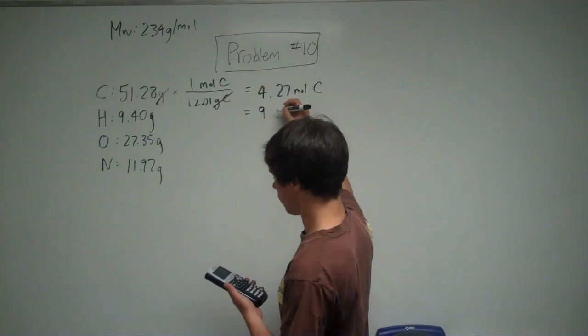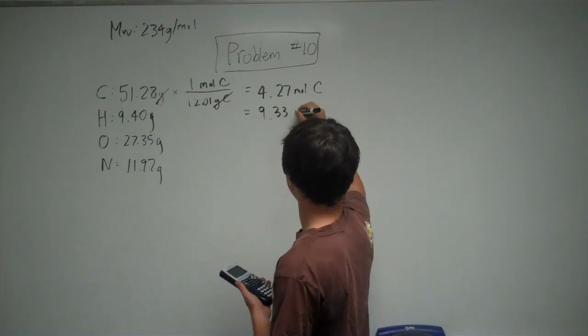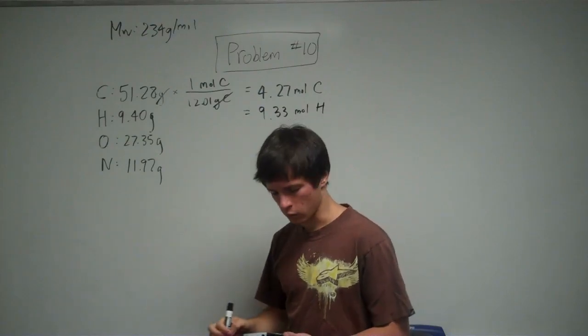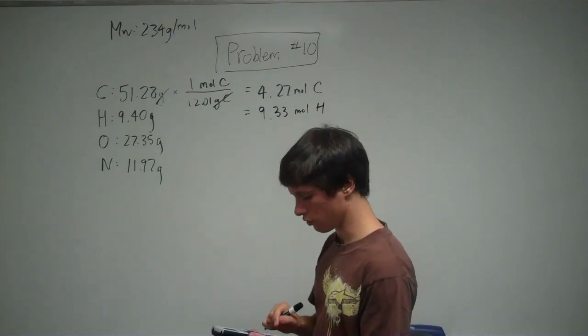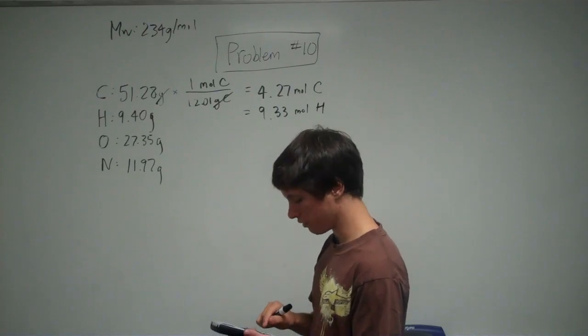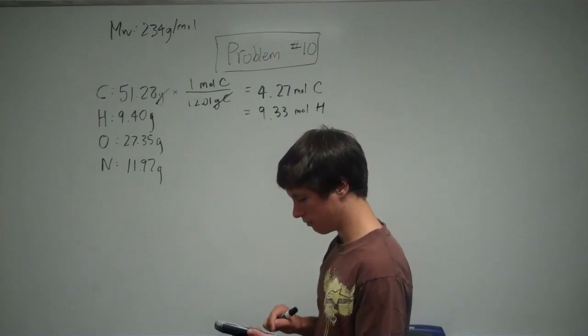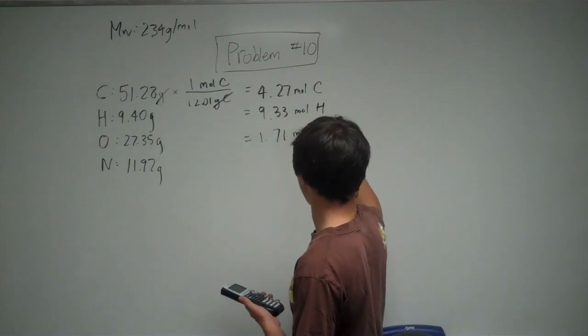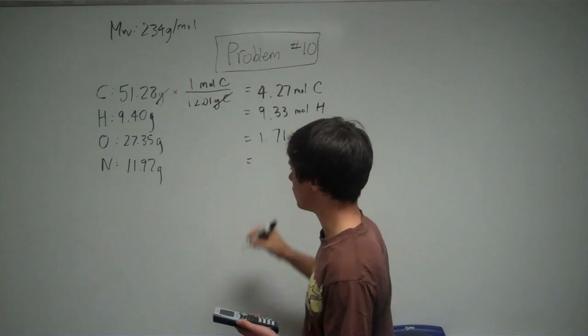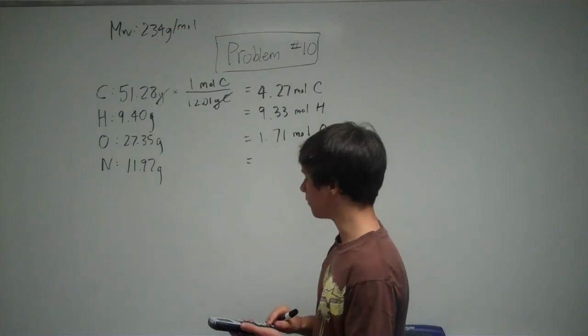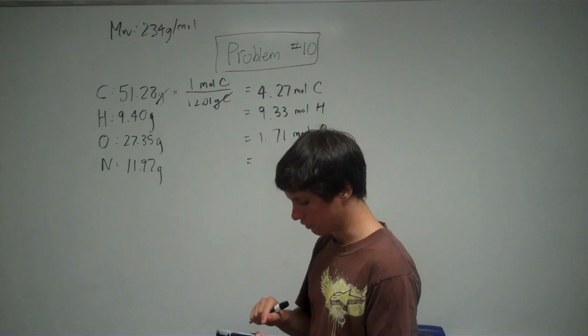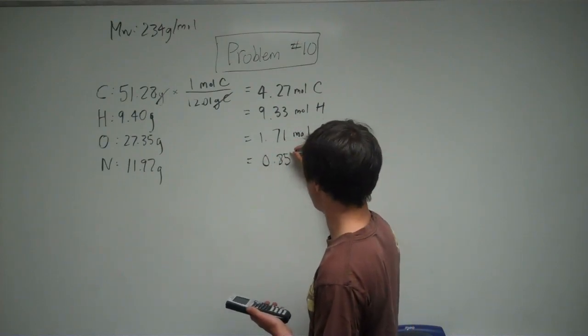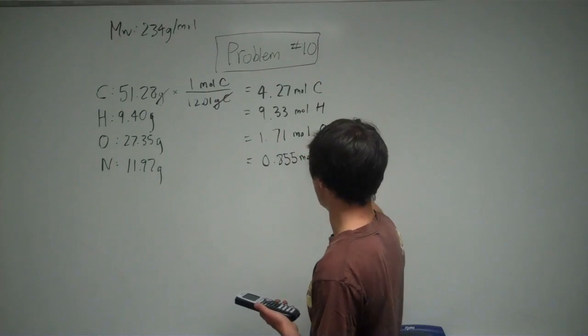And then, oxygen, the molar mass is 16 grams per mole. So you're going to do 27.35 divided by 16 is 1.71 moles of oxygen. And then, finally, nitrogen, the molar mass is 14. So you're going to do 11.97 divided by 14 is 0.855 moles of nitrogen.